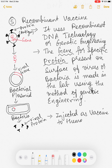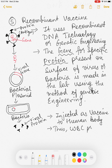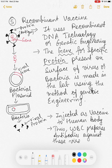The human body recognizes this viral protein as an antigen, and WBCs make antibodies against it. So WBCs prepare antibodies against these viral proteins. This is called a recombinant vaccine — we are making the viral protein in the lab and injecting it into the human body.